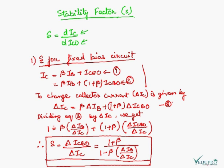To change the collector current, delta IC is given by this expression, equation 3. Now if we divide this equation 3 by delta IC, we get this, and as this is the stability factor, this is S, so we get this.